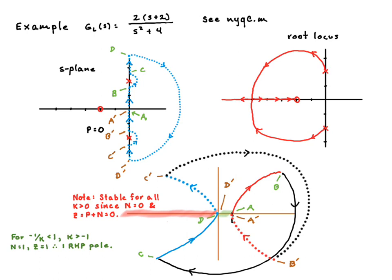So anyway, if we look in that region and draw a ray, we have one encirclement, and so there's one right half plane pole. It's not because it's one encirclement necessarily, but it's because P is equal to 0, and N is equal to 1, and Z is the important part, which is P plus N.